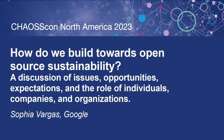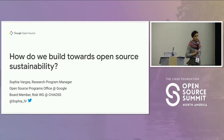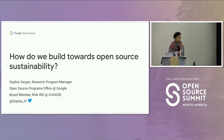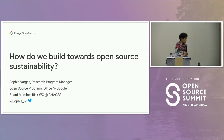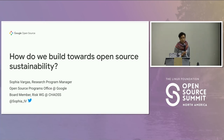Hello everyone. My name is Sophia Vargas. I'm a program manager in Google's open source programs office where I focus on research and analytical tasks in support of our open source programs, projects, and communities. I've also been working with the CHAOSS community since 2020, and I'm here today to talk about building toward open source sustainability.